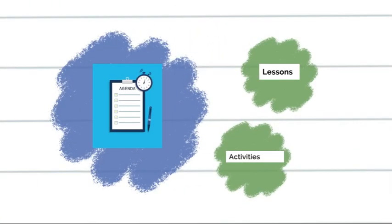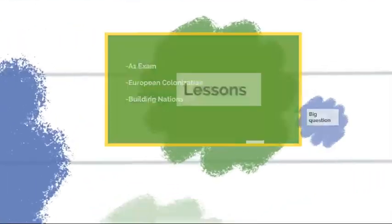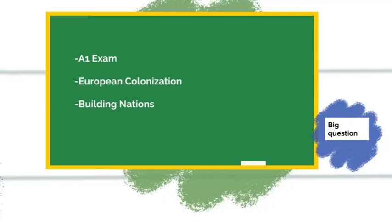Let's start looking at our agenda, the lessons, and what we have on our action plan. We're going to be reviewing for the A1 exam that is October 23rd. So on the 22nd, we're going to be reviewing some slideshows and going over multiple choice questions and charts or maps that you'll be having to label or answer on the exam.